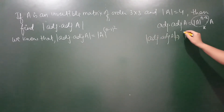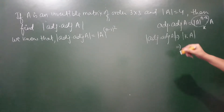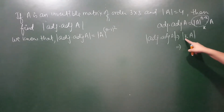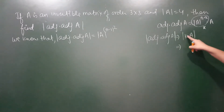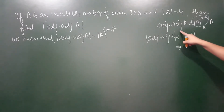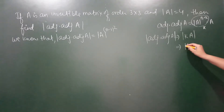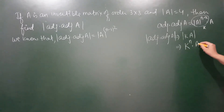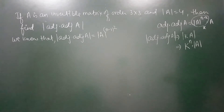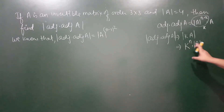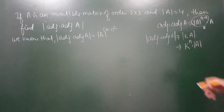Determinant of this equals determinant of this. अब हमें पता है कि अगर कोई scalar किसी matrix से multiply हो और उसका determinant निकालना हो, तो यह होता है k की power n into determinant of A, जहाँ n उस matrix का order है और k एक scalar है।